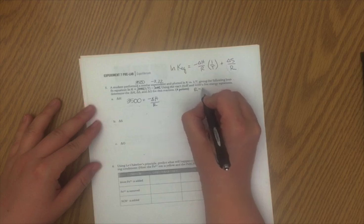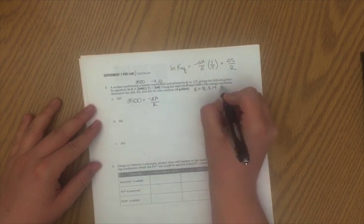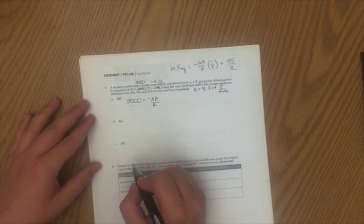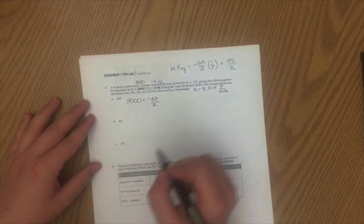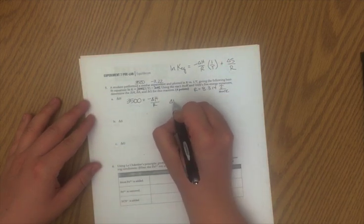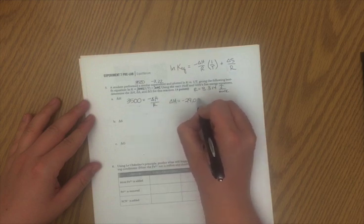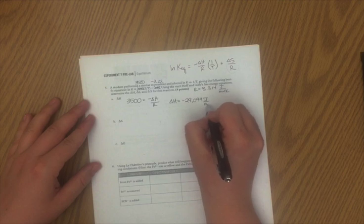Because we're dealing with energy here, not gases. I'll substitute that in, and I'm going to calculate ΔH as negative 29,099 joules per mole.